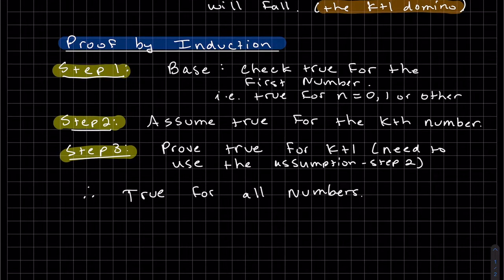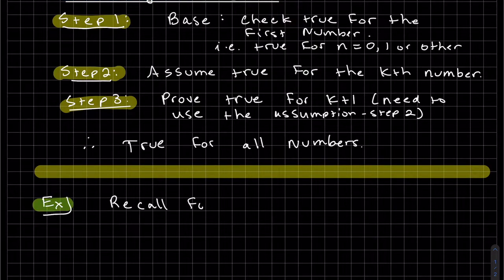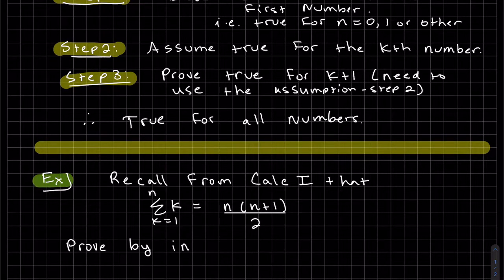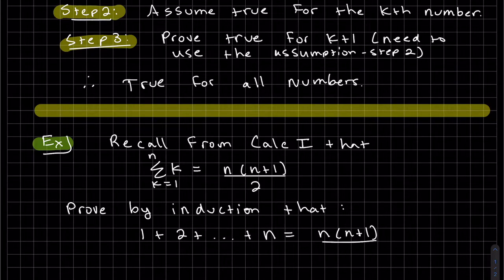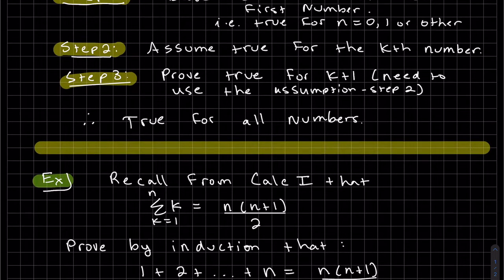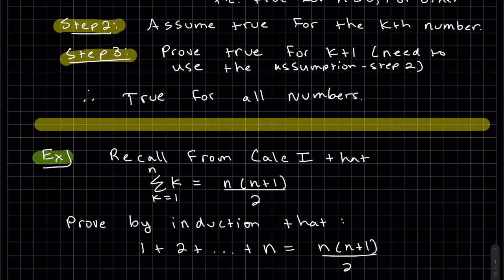Let's do an example. Okay, so the problem is a summation that we learned in calculus 1, that the summation of k from k equals 1 to n, so that would mean 1 plus 2 plus summing all the ones from 1 to n, that it's equal to n times n plus 1 divided by 2. So we want to prove that this is true by induction.